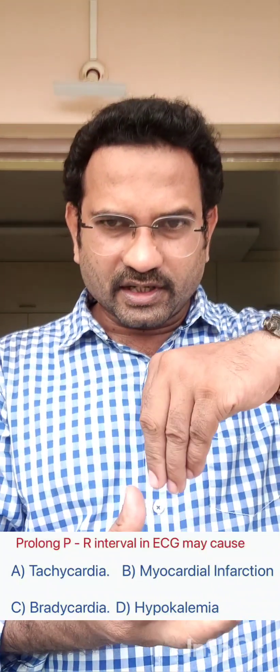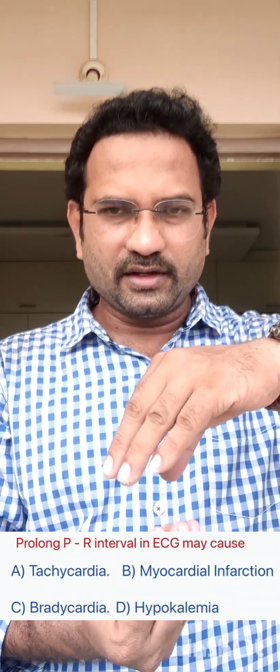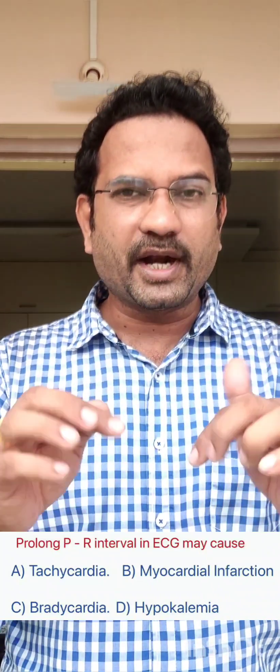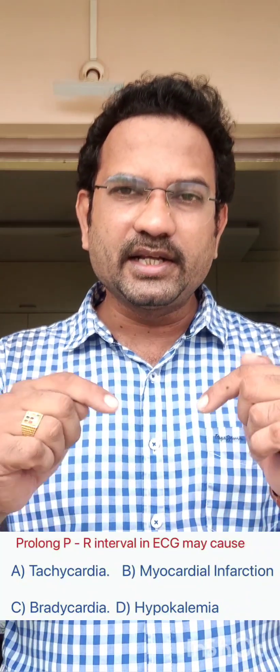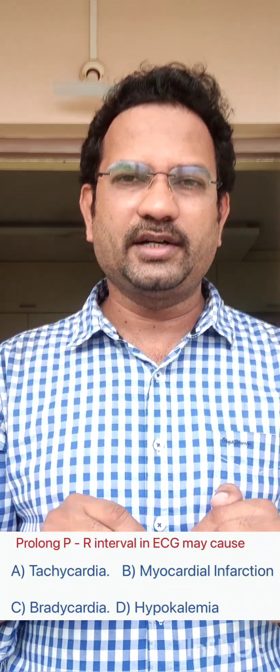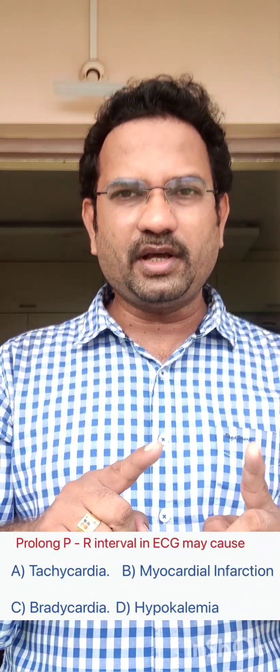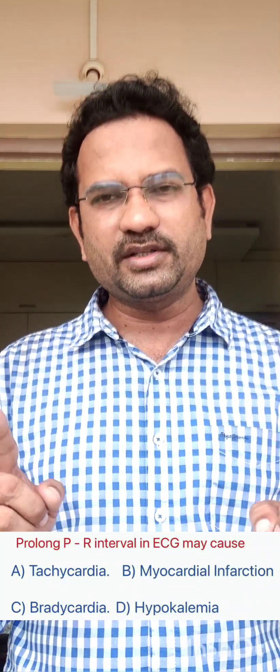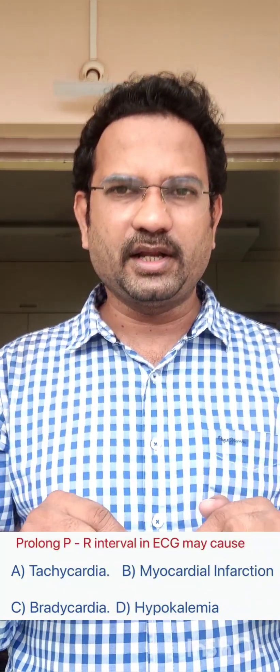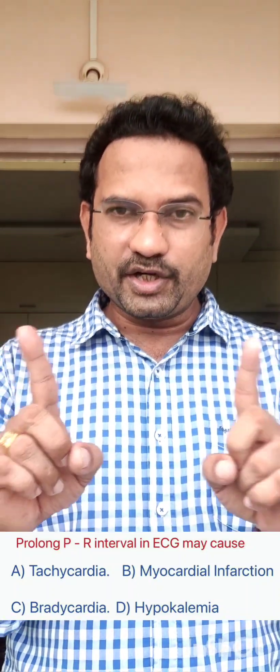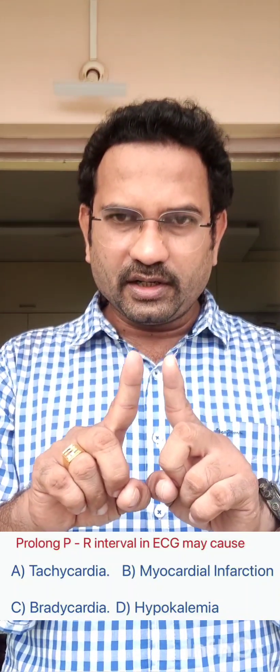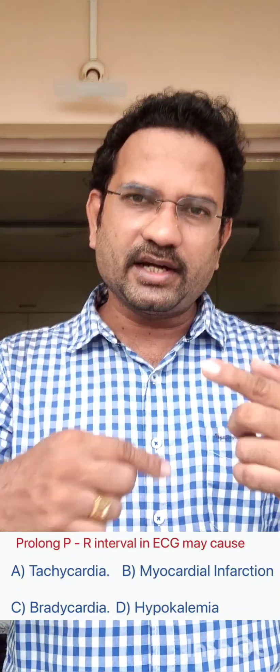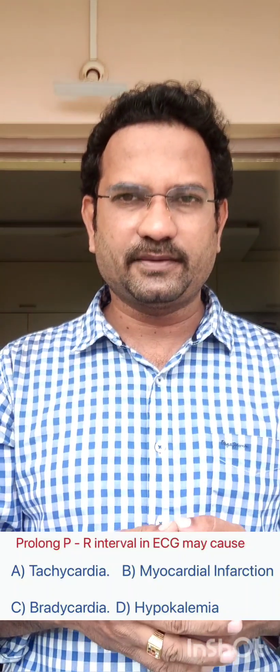Why? Because these contractions are delayed. Reduced heart rate means bradycardia, a decrease in heart rate. So PR prolongation causes bradycardia, whereas PR shortening causes tachycardia, an increase in heart rate.